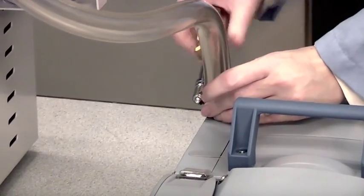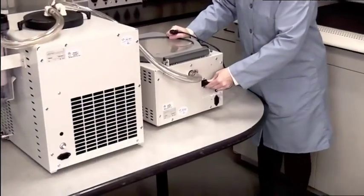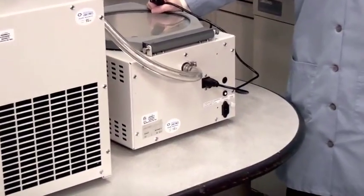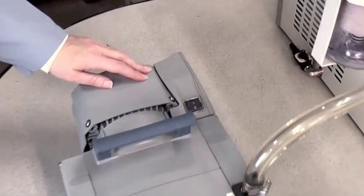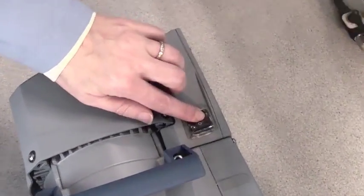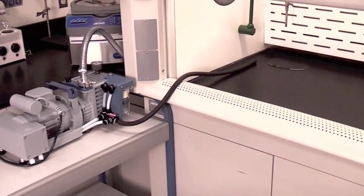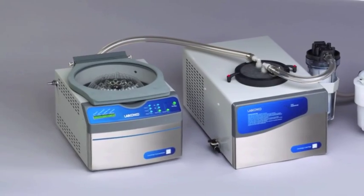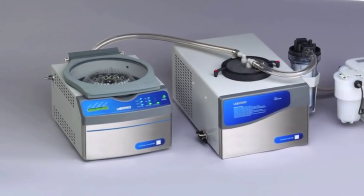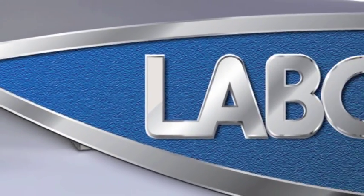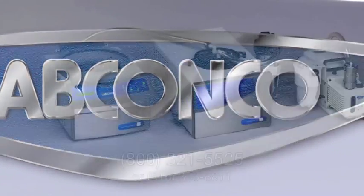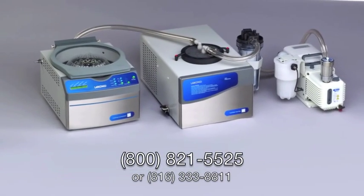Finally, place your pump next to the cold trap and attach the tubing to the inlet. Plug your pump into the back of the Centravap and turn it to the on position. Vent the vacuum pump into a chemical fume hood. If you have any questions during the setup of your Centravap system, call LabConco at 800-821-5525.